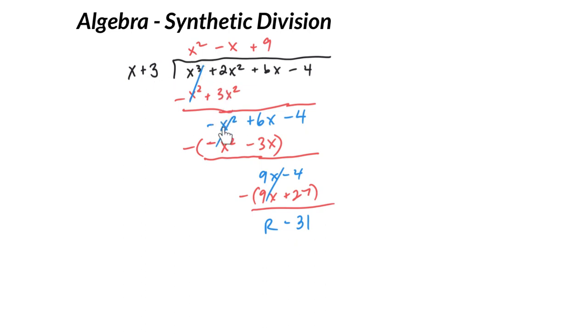And then we redid it. We said, okay, negative x squared divided by x is negative x, and we repeated subtraction, and we got down to a remainder.